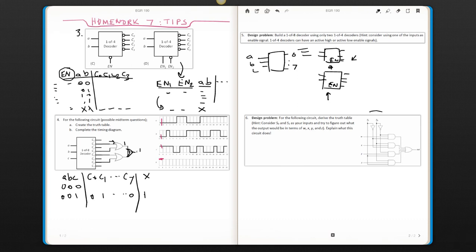For the 6, consider S0 and S1 are your inputs. And think what your output would be. Since your output is a combination of all of these gates, whichever one generates a 1, your output is going to be 1. So try to express your output in terms of W, X, Y, and Z. That will help you solve this problem.